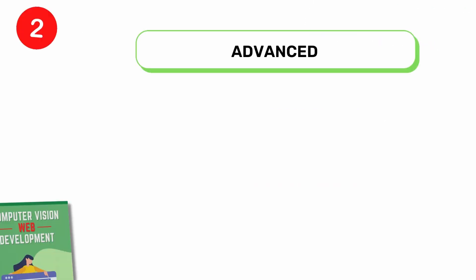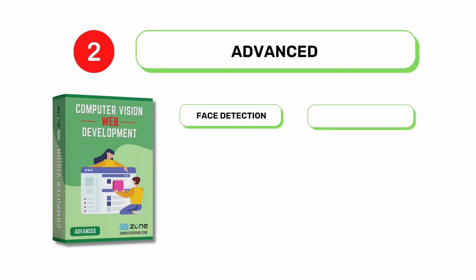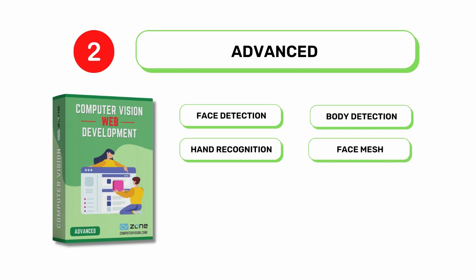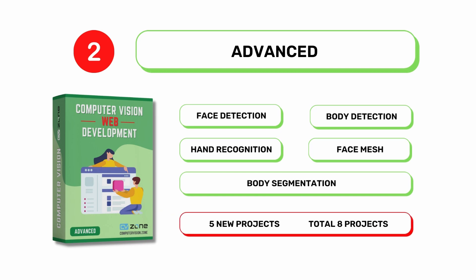In the second part, computer vision web advanced, you will learn face detection, body detection, hand recognition, face mesh detection, body segmentation and much more to create some advanced projects. Here we will create five projects to solidify what we have learned.